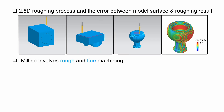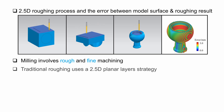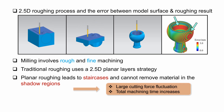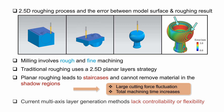Traditional rough machining uses a planar 2.5D strategy to remove excess materials. But due to the fixed direction of the tool and planar movement, shadow regions cannot be accessed and it also creates a staircase effect. To solve this, multi-axis roughing has been developed, but current methods are not easy to control when changing the shape of the layers along which material is to be removed.